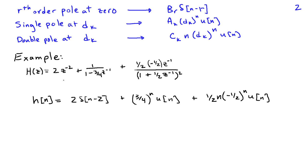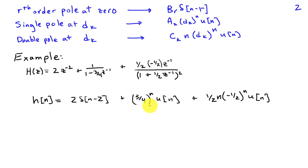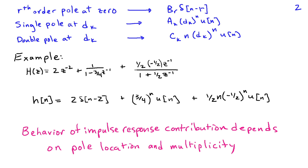Here's a simple example. Suppose we expanded H(z) and wrote it as 2z^{-2} plus 1 over (1 minus 3/4 z^{-1}), plus 1/2 times (-1/2 z^{-1}) over (1 plus 1/2 z^{-1}) squared. We have a single pole at z equals 3/4, a double pole at z equals -1/2, and the impulse response is 2 delta(n minus 2) plus (3/4)^n u(n) plus (1/2)n (-1/2)^n u(n). The behavior of the impulse response depends entirely on the pole location and its multiplicity.